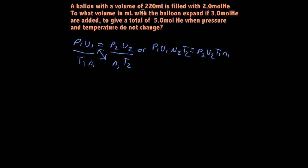Now all we need to do is take what our problem is asking us and plug the values into our formula. Let's read the problem: a balloon with a volume of 220 milliliters is filled with 2 moles of helium. To what volume in milliliters will the balloon expand if 3 moles of helium are added, to give a total of 5 moles, when the pressure and temperature do not change? So we can go ahead and forget about pressure and temperature in this formula — cross those out — and we're going to be left with volume and moles.